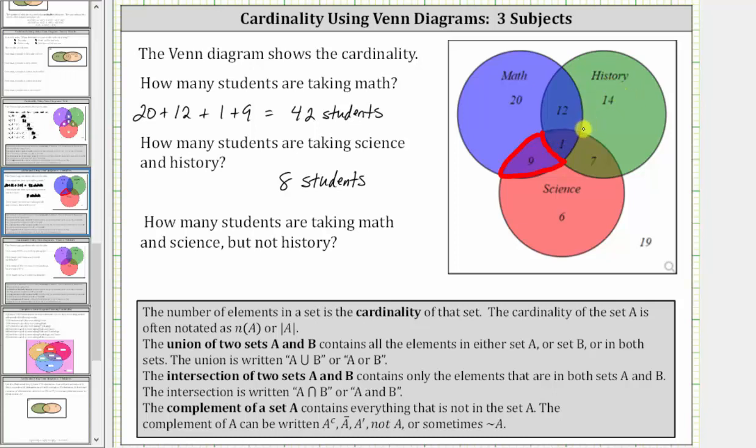We're trying to find the number of students taking math and science but not history, which we now know is 9 students.